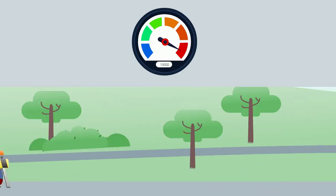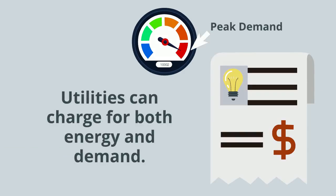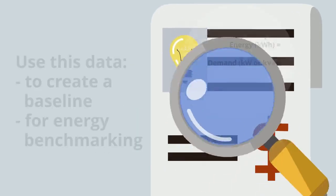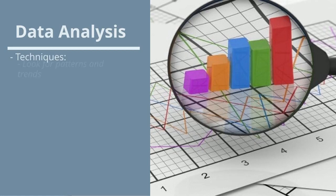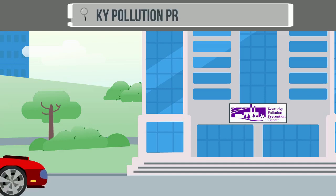Utilities often use max speed, or peak demand, to calculate demand charges, while the total distance traveled, or total electricity consumed, is used to calculate energy charges. Consumers can use this data from their electric bills to track energy usage and maintain records. These records can then be analyzed and used to facilitate improvement.